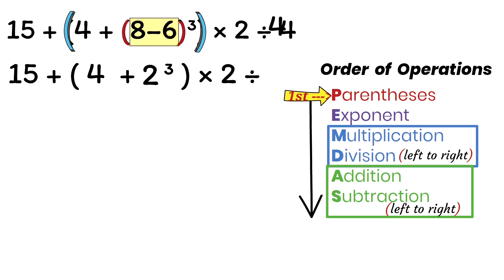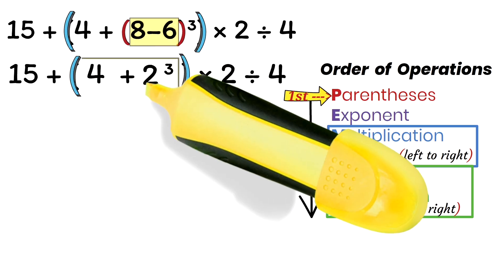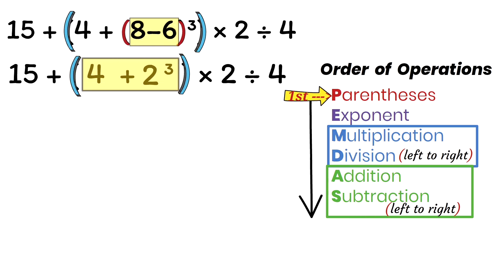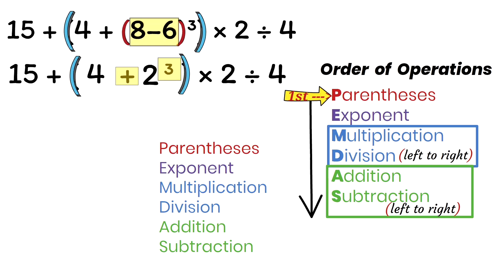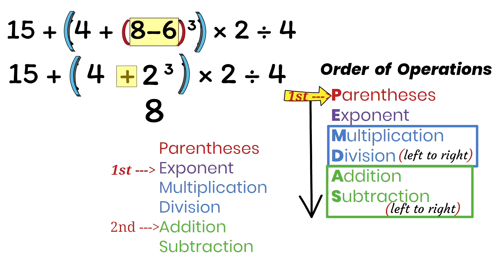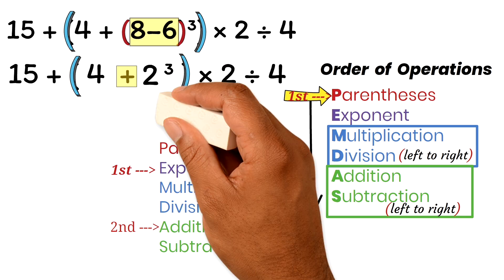So our expression is now updated. Since we still have parentheses, our next operation is still parentheses. However, here we have multiple operations in the parentheses — we have addition and exponent. When you have multiple operations in parentheses, you have to apply a separate order of operations to simplify it. Taking just what is in the parentheses and applying PEMDAS, we know we have to perform the exponent operation before the addition. We have 2 cubed, which is 2 times 2 times 2, equaling 8. Now we perform the addition: 4 plus 8 simplifies everything in the parentheses to 12.